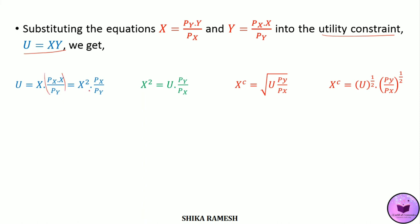This gives u equals x squared times Px by Py. Bringing x squared to the LHS gives x squared equals u times Py by Px. Bringing the square to the RHS gives x equals the square root of u times Py by Px. This can also be written as x equals u raised to 0.5 times Py by Px raised to 0.5.